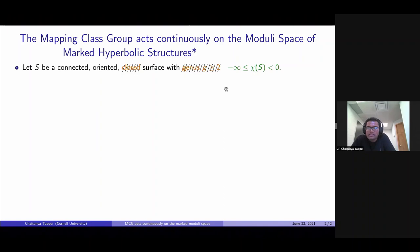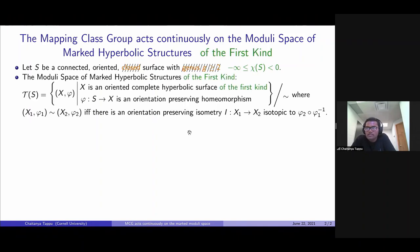So what is the right space for MCG to act on? Following some ideas from earlier work, here's what I believe is the right guess. You simply add the adjective 'of the first kind' to the complete hyperbolic surface. First kind means that the limit set of the corresponding Fuchsian group is the whole circle at infinity. We get the modular space of marked hyperbolic structures of the first kind. Topology is defined exactly as before.